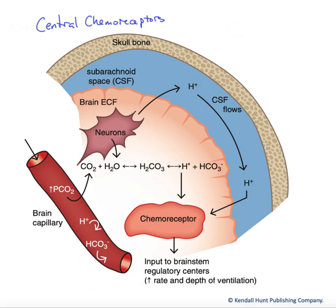Central chemoreceptors are found in the ventral medulla of the brain, shown down here. These are sensitive to free proton levels, but the free proton levels are acting as a mediator — a middleman responding to increases in carbon dioxide.